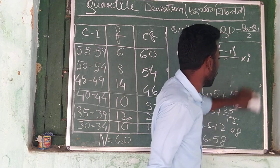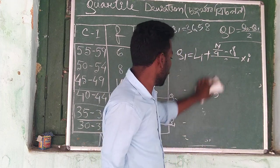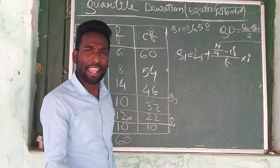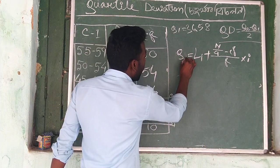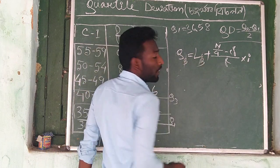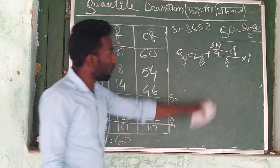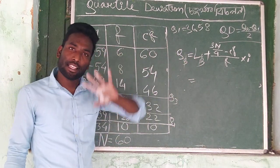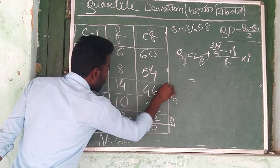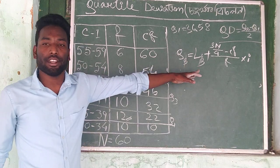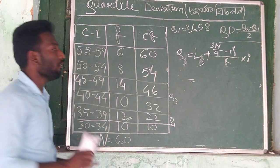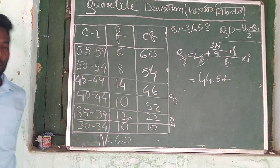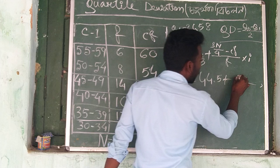Now for Quarter 3, we use the same formula but change it to L3: Q3 equals L3 plus (3n by 4 minus CF) into I by f. In this case, we have to find L3, the lower boundary of the Q3 class, which is 44.5. The class frequency here is used accordingly.